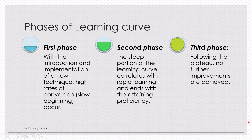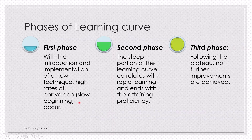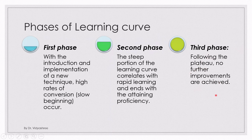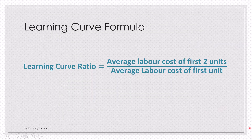To summarize: with the introduction of a new technique, a slow beginning occurs when an employee is introduced to a new technique. In the second stage, the steep portion of the curve correlates with rapid learning and ends with proficiency. After reaching proficiency, he enters the third phase — plateau — where no further improvements are achieved.